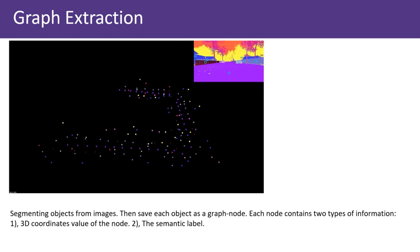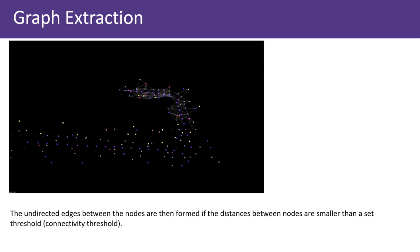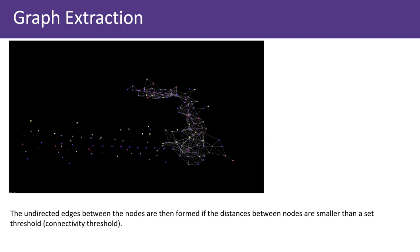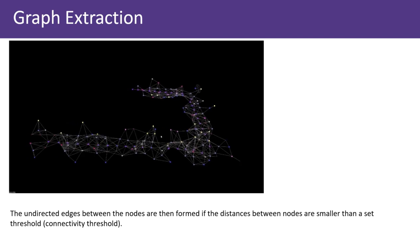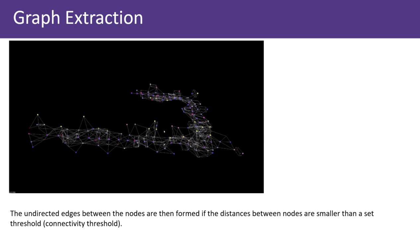first, 3D coordinate values of the node; second, the semantic label. The undirected edges between the nodes are then formed if the distances between nodes are smaller than a preset connectivity threshold.